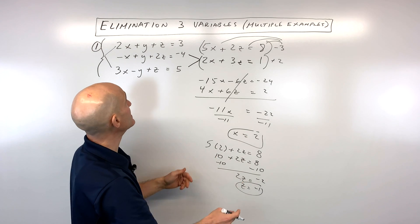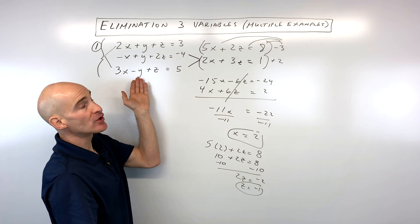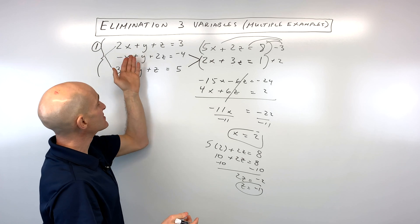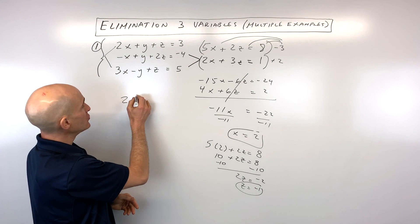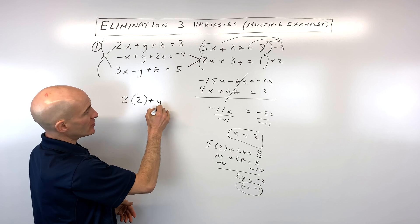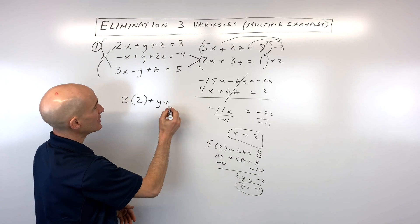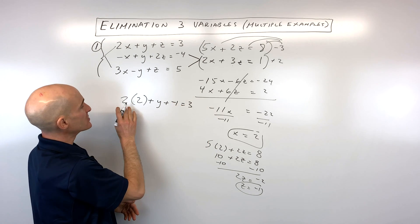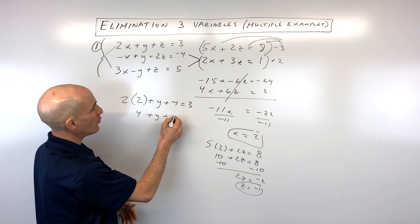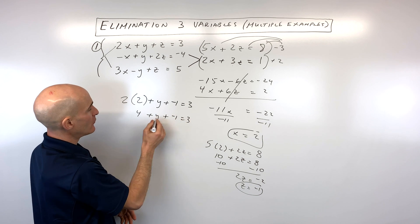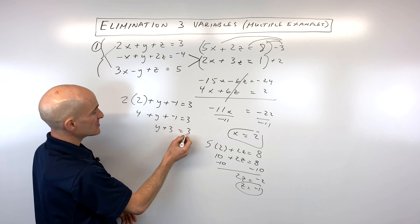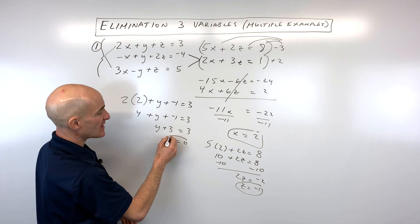We have x and z, so now we go back to one of the original three-variable equations — I'll use the top one: 2 times 2, plus y, plus negative 1, equals 3. So 4 plus y plus negative 1 equals 3, and 4 plus negative 1 is 3. Subtracting 3 from both sides, y comes out to 0.